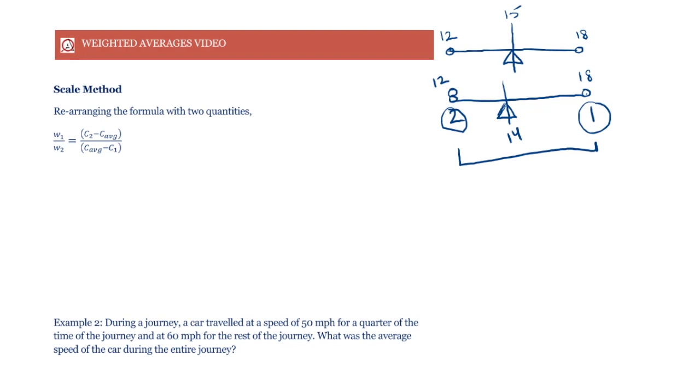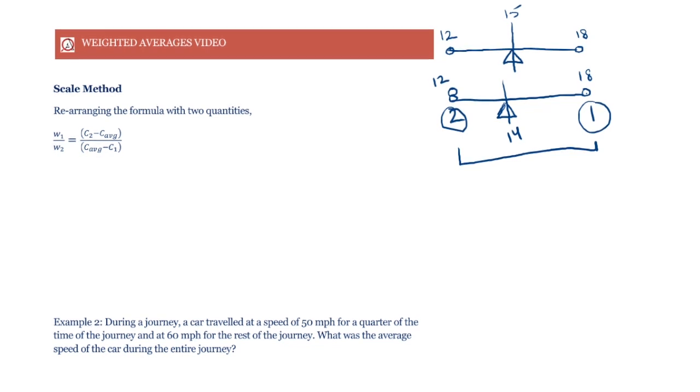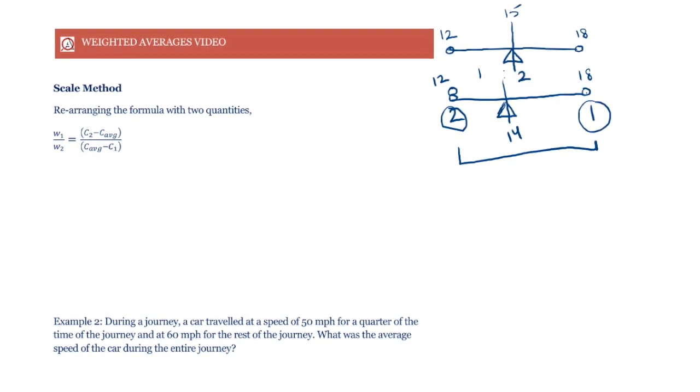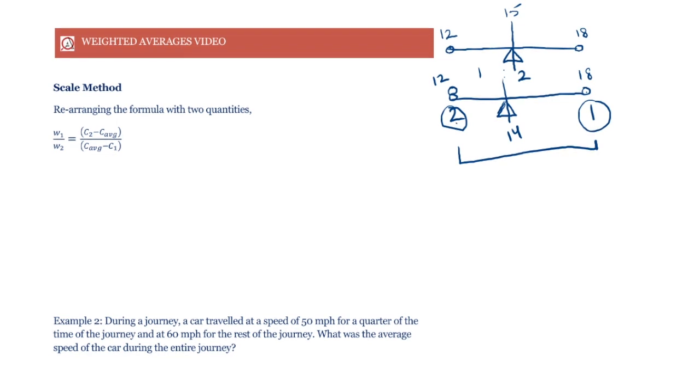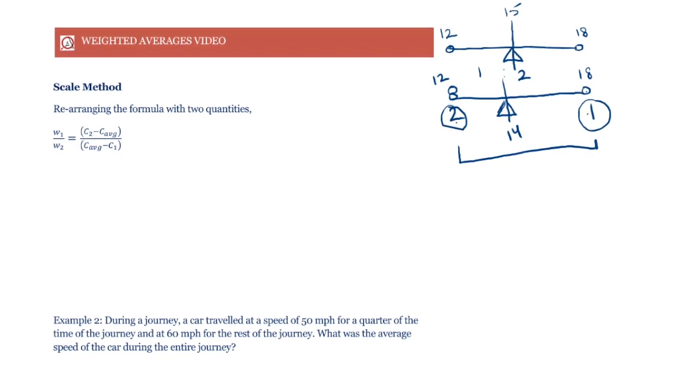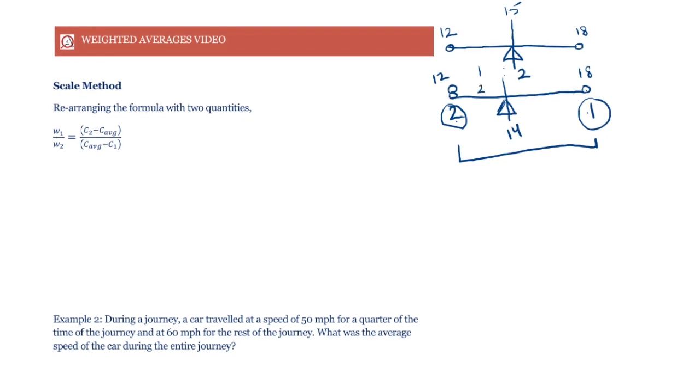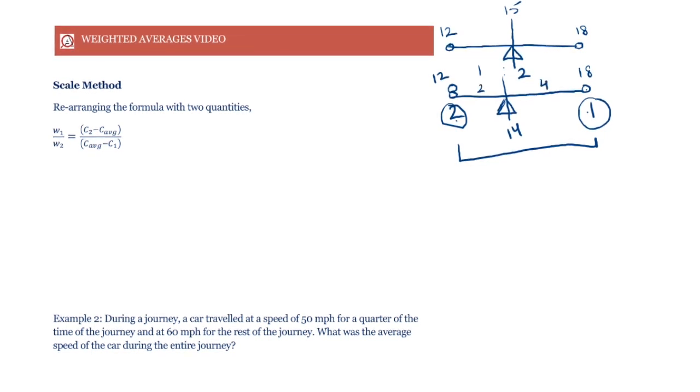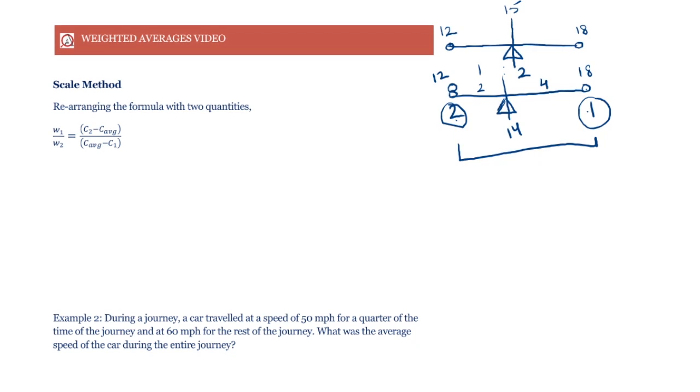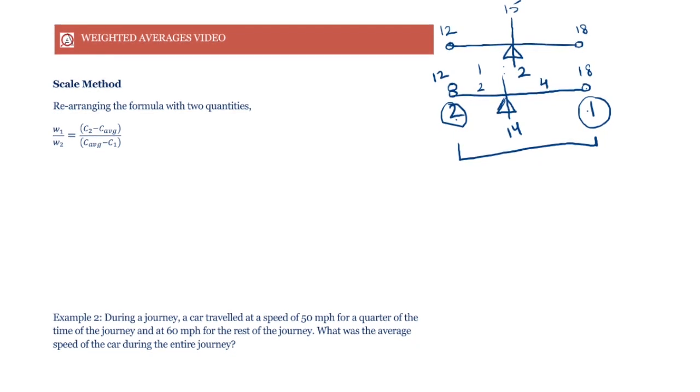The distance between 12 and 18 gets split in the ratio 1 is to 2, since the weights are in the ratio 2 is to 1. Since the distance is 6, we have 2 here and 4 here. That is how we get the average of 14. When we add 2 to 12, we get 14.